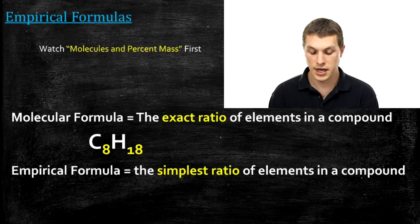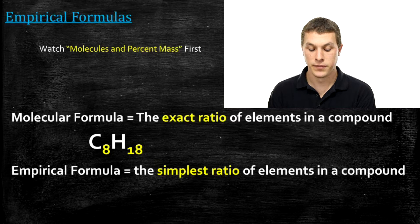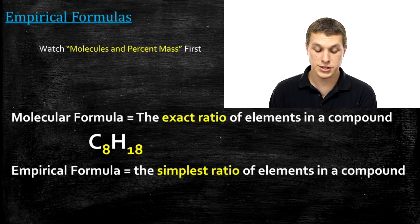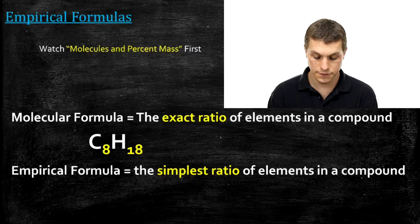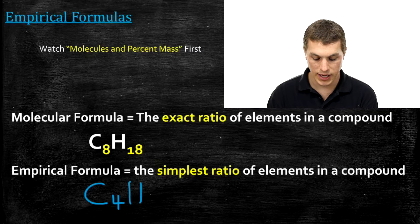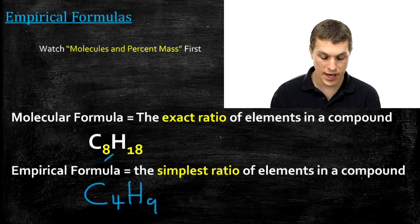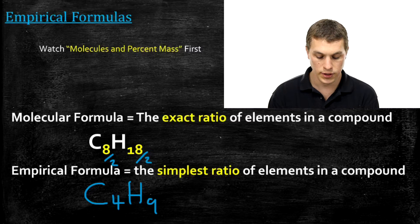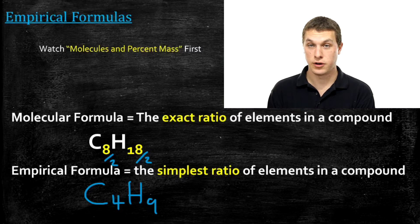On the other hand, your empirical formula is the simplest ratio of elements in your compound. If you think about C8H18, that tells you about the ratio between carbon and hydrogen, and you can actually reduce C8H18 to C4H9. So the empirical formula corresponding to that molecular formula is C4H9 — all we did was divide 8 by 2 and 18 by 2 to get C4H9, the simplest ratio of carbon to hydrogen.